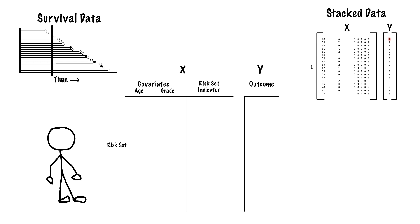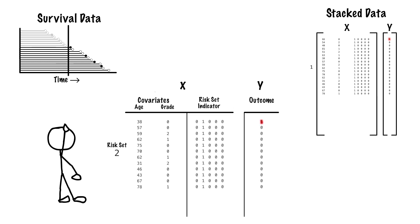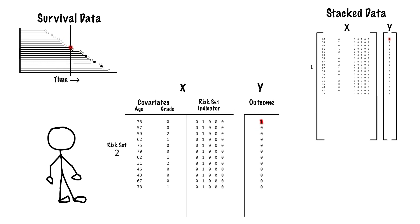Now, we repeat this for the second observed event time. We create our risk-set data matrix and outcome vector, containing covariates, risk-set indicators, now indicating the second risk-set, and outcome vector.